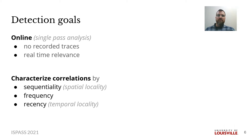Our goal is to have a detection framework that is online — that is, it operates on a stream, analyzing data access in real time with a single pass. This prevents the need to record traces, which wastes storage space, causes additional disk I/O, and inhibits timely reactions to changes in patterns. In addition, we wish to characterize data correlations in the three dimensions of sequentiality, frequency, and recency.